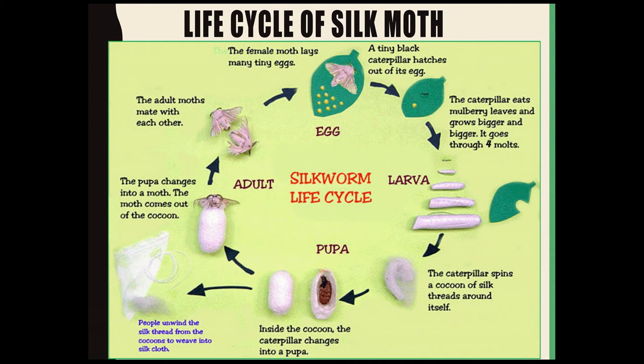After that, the silk moth enters its last stage of life — the adult stage. When the pupa develops completely to form an adult silk moth, the silk moth inside the cocoon secretes digestive enzymes. These enzymes break the cocoon and the beautiful silk moth comes out. The adult female silk moth will again lay hundreds of eggs, completing the life history of the silk moth.